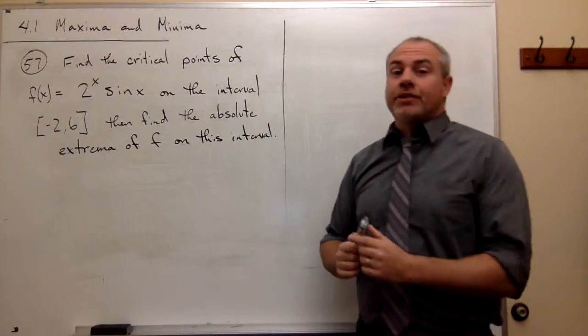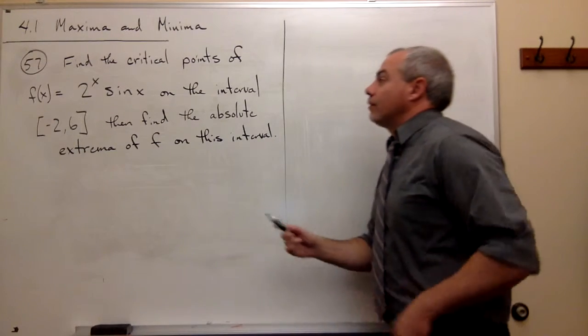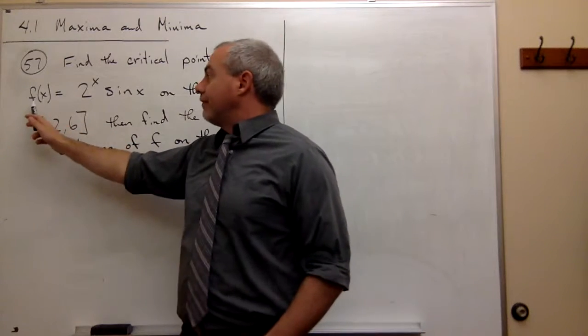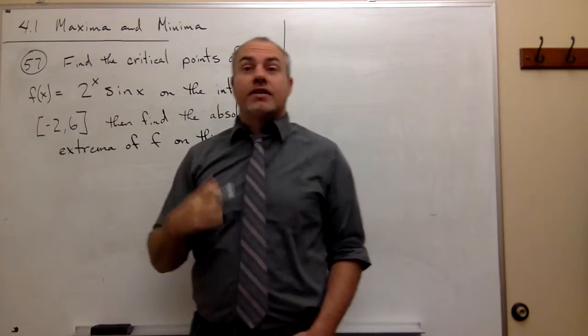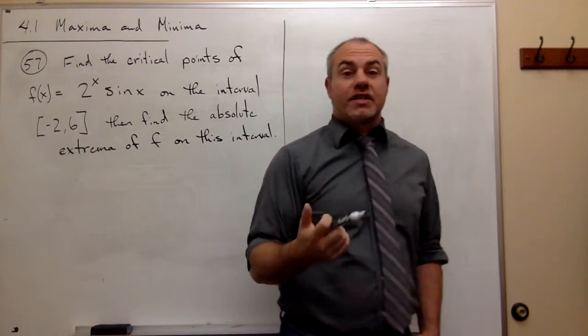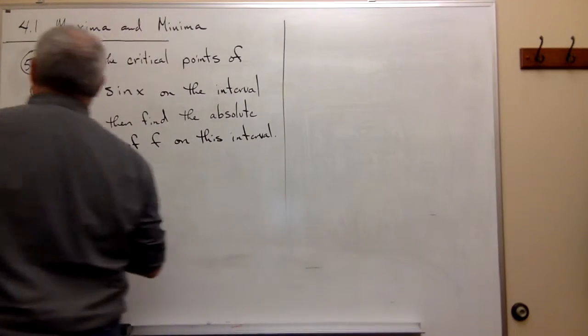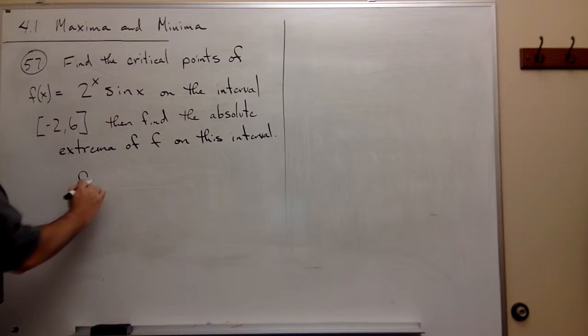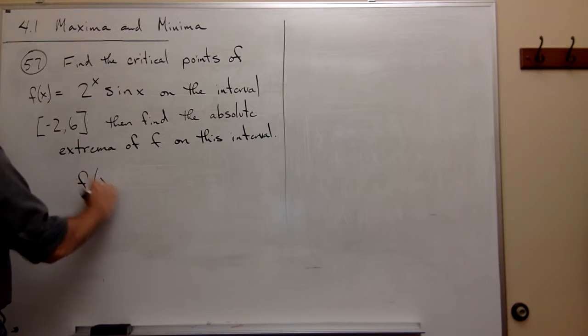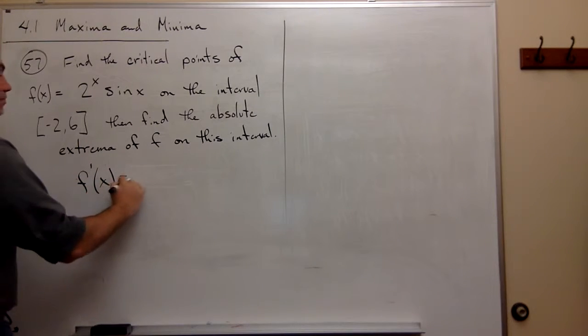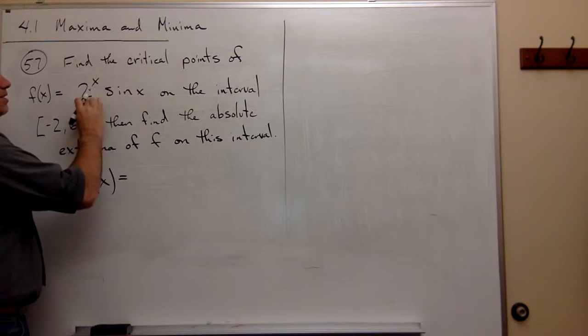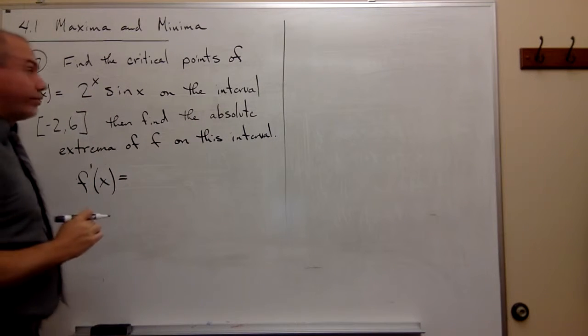Same process that we've been through before. The first thing that we want to do is we want to take the derivative of this function and set it equal to 0 and see what our critical points are. So let's take the derivative of f of x equals 2 to the x sine x. So f prime of x would be equal to, this is a product of two functions, so we need to use the product rule.